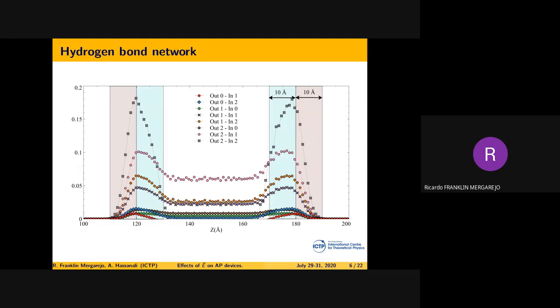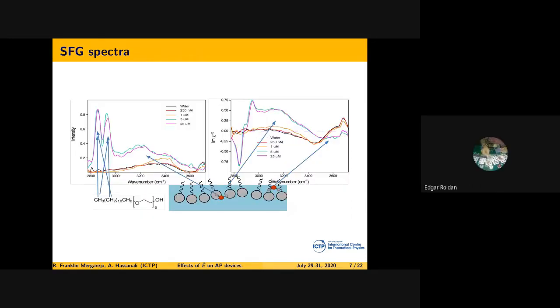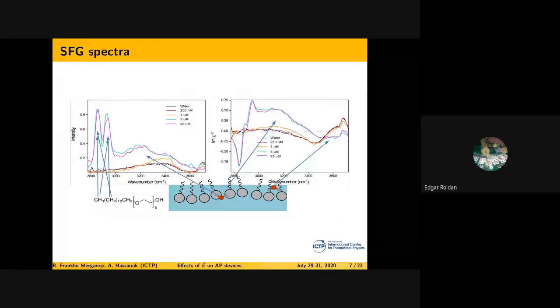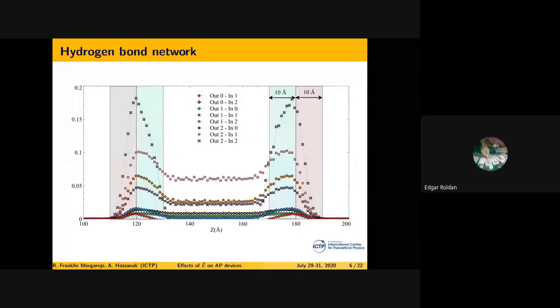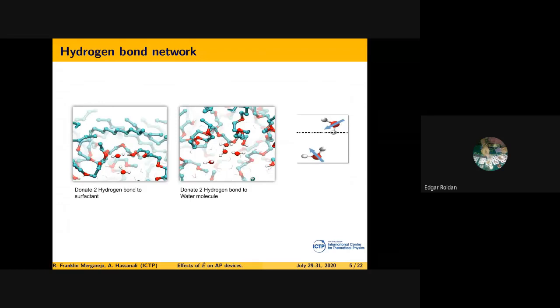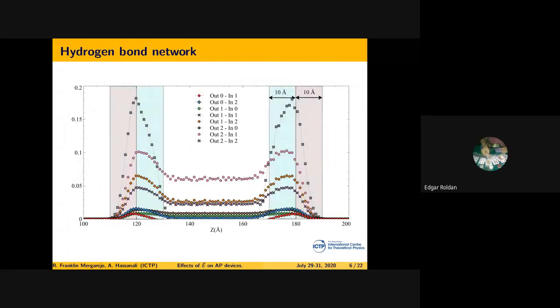In parallel, collaborators performed experiments that corroborate part of our results. Sorry, in the previous slide—no, the next one—what do the different symbols mean?